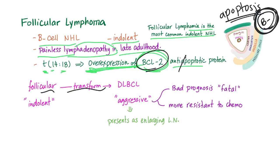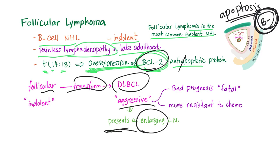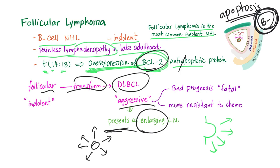Follicular lymphoma can transform into diffuse large B-cell lymphoma, which is aggressive. It presents as an enlarging lymph node — the patient has a lymph node that was already large, but is now increasing in size. Be very suspicious. This is similar to a nevus on your skin that suddenly starts to grow and change color — think melanoma. Same concept.